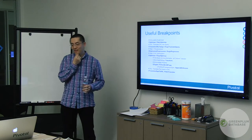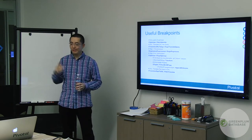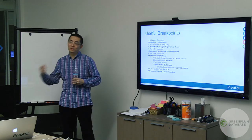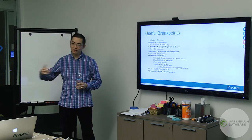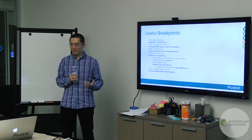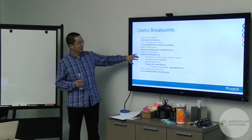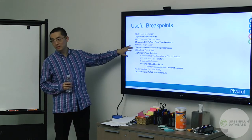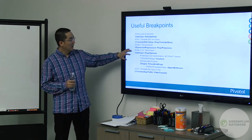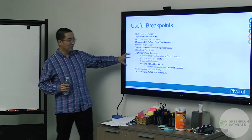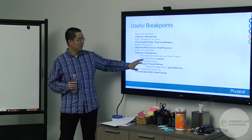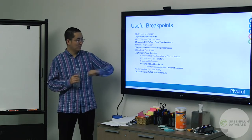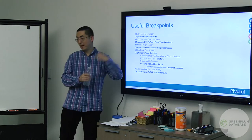One interesting thing about the optimizer: it's scheduler-based, so it doesn't have a traditional call stack. If rule one is applied, then rule two, then rule three, you won't see a call stack showing one, two, three. So where do you set breakpoints? Here are the critical points: entry point for the entire optimizer, DXL-to-query translation, pre-processing steps including predicate pushdown, and then the optimization steps for exploration, implementation, property enforcement, and finally translating the execution plan back to DXL to give it to the host.